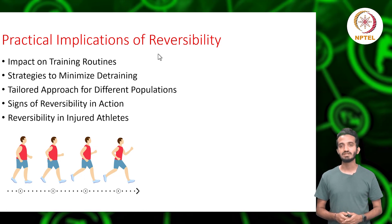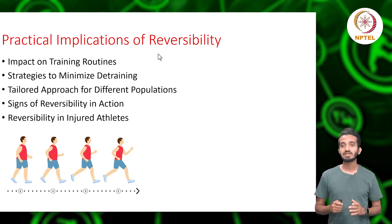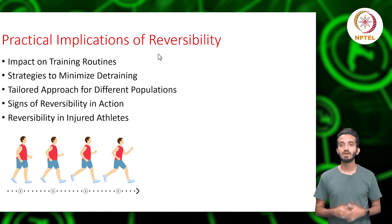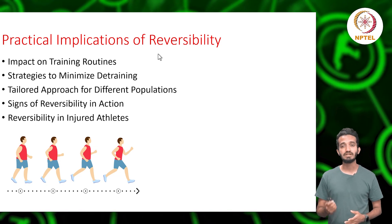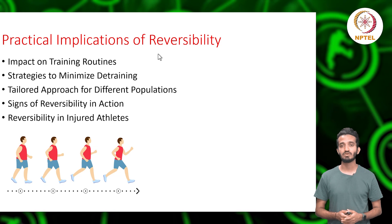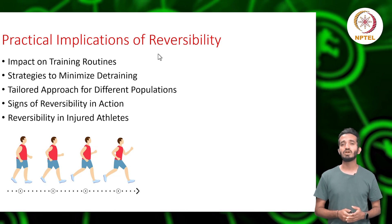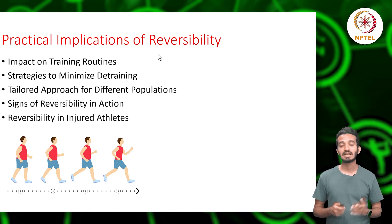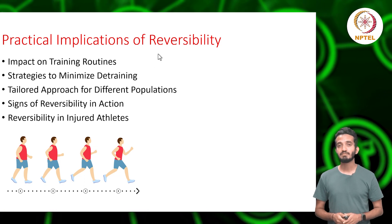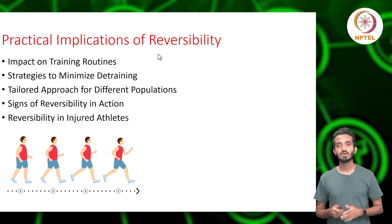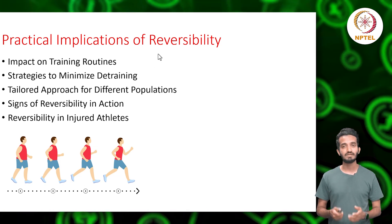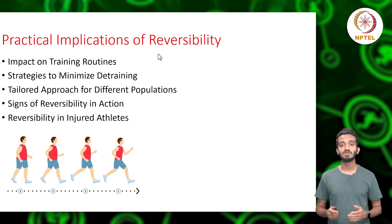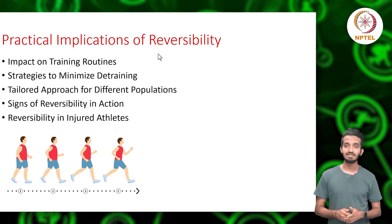As we grow older, our bodies undergo various physiological changes. Muscle mass begins to decline — a process known as sarcopenia. Hormonal shifts, particularly a decrease in testosterone and growth hormone levels, can slow down muscle growth as well as repair. As a result, older athletes might find themselves on a faster track of reversibility if they pause their training regimen.